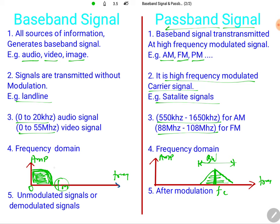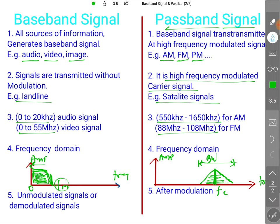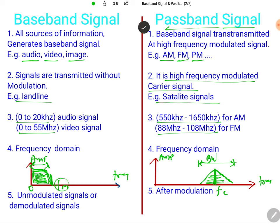The bandwidth of the baseband signal starts from zero to some frequency, while passband signal bandwidth is centered around the carrier. In short, baseband signal is an unmodulated or demodulated signal, while passband signals are generated after the modulation process. Baseband signals carry pure information like audio, video, and image, with frequency starting from zero hertz to some range depending on the type of information.